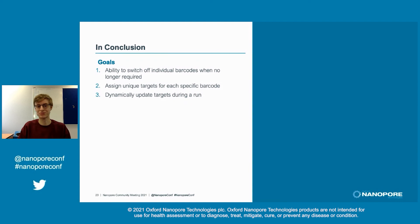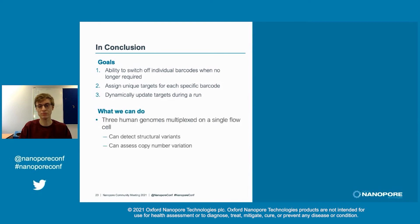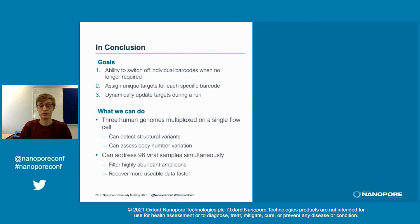To recap, we wanted to be able to switch off barcodes, target unique regions on each barcode, and allow this all to be updated dynamically. We have sequenced multiple human genomes on a single GridION flow cell with sample-specific target panels, and we can assess structural variants and copy number variation. We can also address 96 barcodes simultaneously with shorter viral material, and while this is more of a filter, we still recover more data than we would by sequencing everything. Barcode-aware adaptive sampling works and is available now in Readfish, and we wouldn't be surprised if it's in Minotaur soon, with plans for it to work on PromethION.